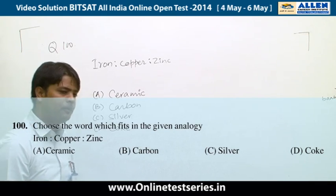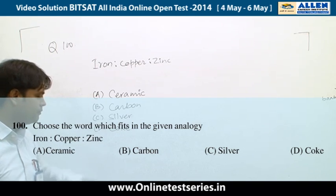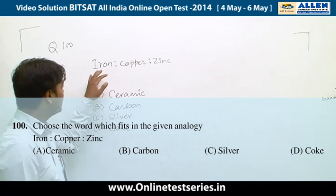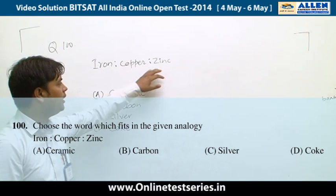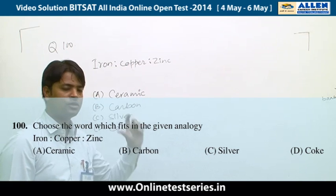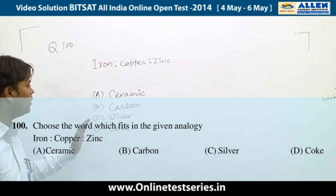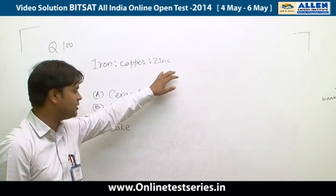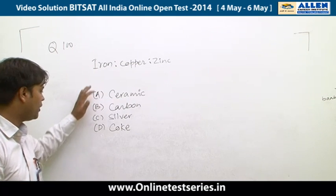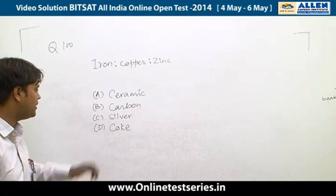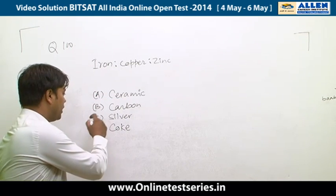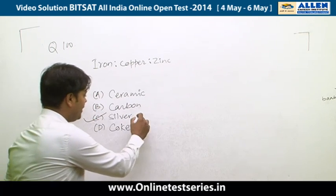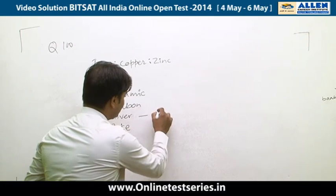Question 100 is from analogy. Iron, copper, and zinc are given as a group. Considering all the options, all three are metals, and among the options, only silver is a metal that represents the same group. So the right answer is silver.